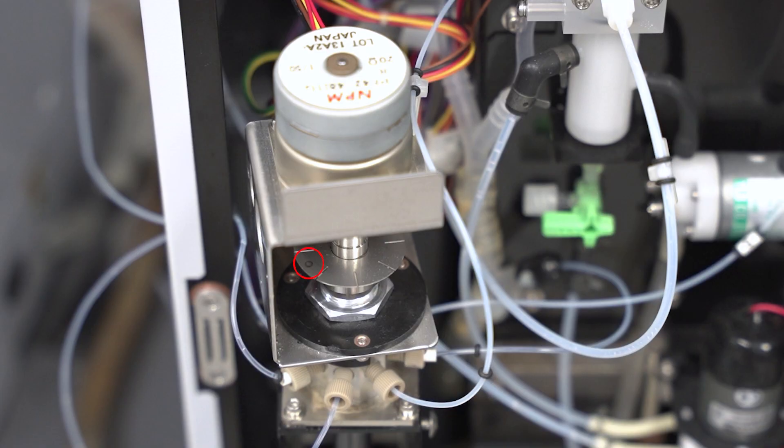First, locate the circle engraved on the silver interrupt plate and make note of which port on the valve it is lined up with. This indicates the port the valve is open to, which is important for ensuring the new rotor will be inserted with the correct orientation.